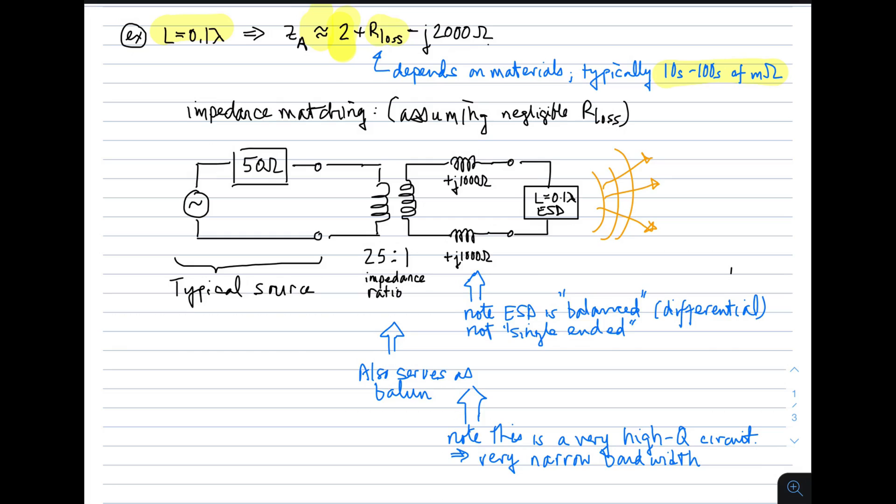And the reactants is big and negative. So for a tenth of a wavelength, typically something like minus two kilohms. So the consequence of that is impedance matching, which is very, very difficult for electrically short dipoles.